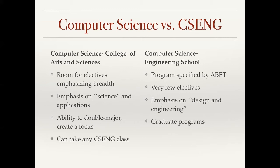Our students are allowed to take any computer science and engineering class that they like, just like the computer science and engineering students can take any of our classes. In fact, there are common courses in both majors. The computer science and engineering degree in the engineering school is within an engineering degree, so it's a program specified by the accreditation board for engineering, called ABET. Because of that, there are lots of requirements outside of the computer science footprint, which include things like chemistry and general engineering courses. Because of that, there are very few electives and very little room to add extra classes within the four years. The emphasis is on the design and engineering within computer science. In addition, the engineering school does have graduate programs, whereas the College of Arts and Science does not.